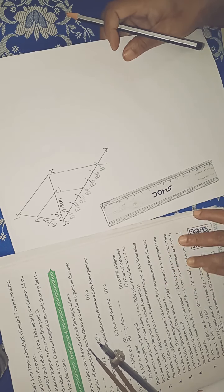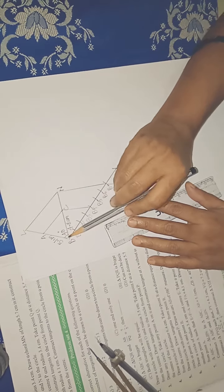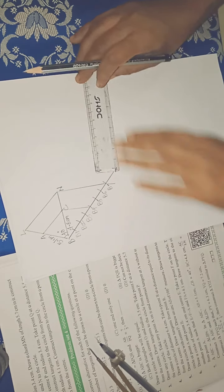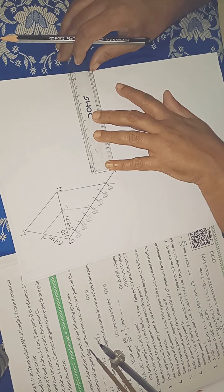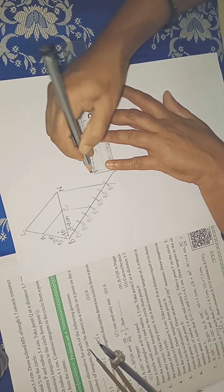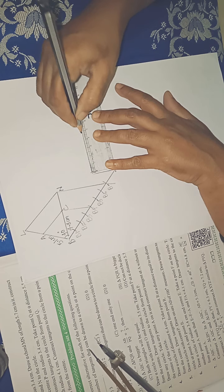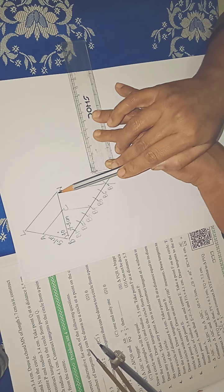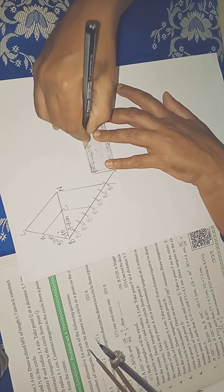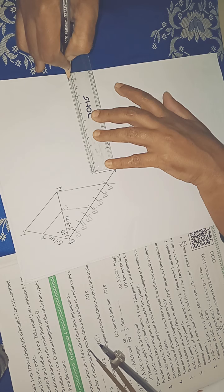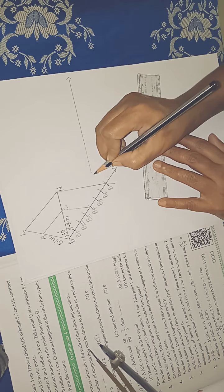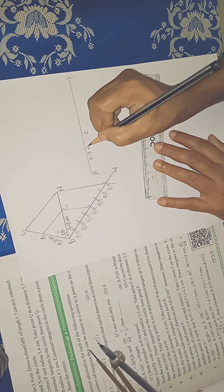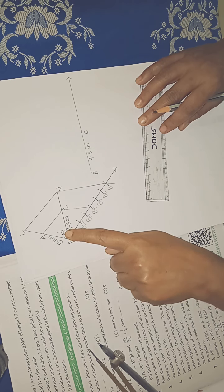To draw the fair figure, first we have to draw segment BC of 4.8 cm. We have to draw a ray BC, because on side BC only we have to take point N, so we need to extend this side BC. This distance is 4.8 cm. Then we have to draw angle B of 40 degrees.